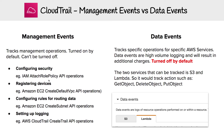Data events are actually only available for two services currently. So if you were creating your trail, you'd see tabs, and I assume as more services leverage data events, we'll see more tabs. But really, it's just S3 and Lambda.